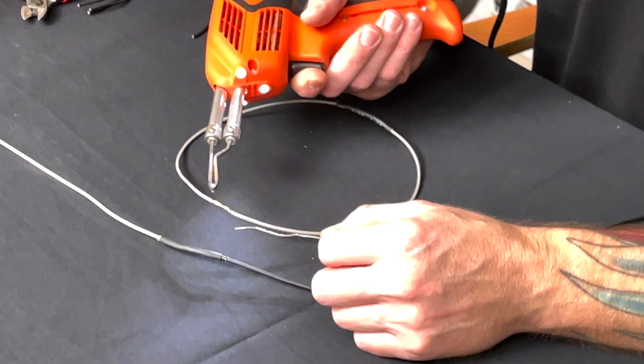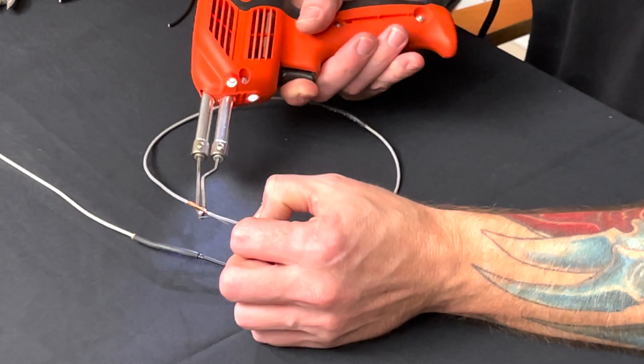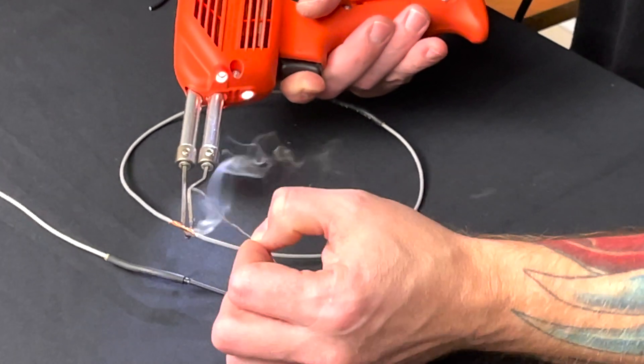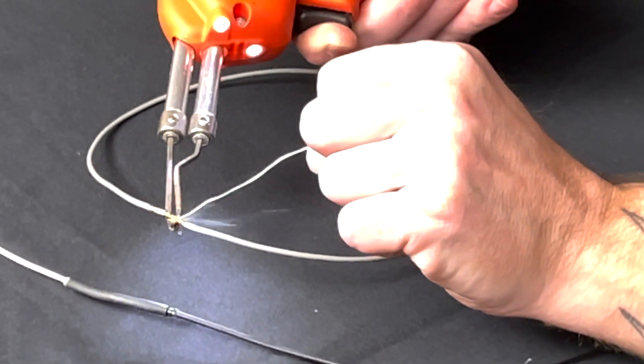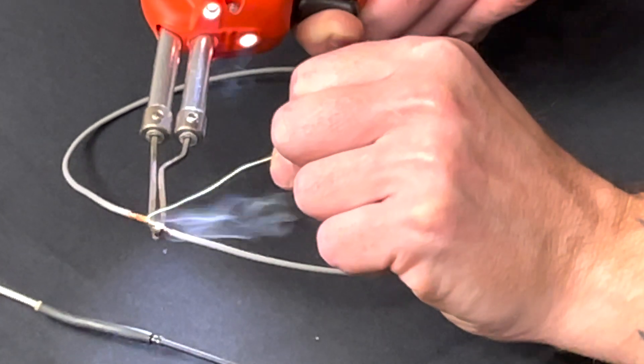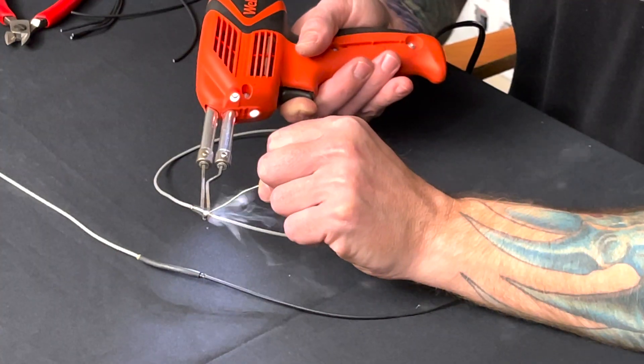So again, run the iron for a second, let it get hot. We should be good—yep, it's melting now. Bring it up under it, melt right into the iron, and then it just transfers right down the wire.